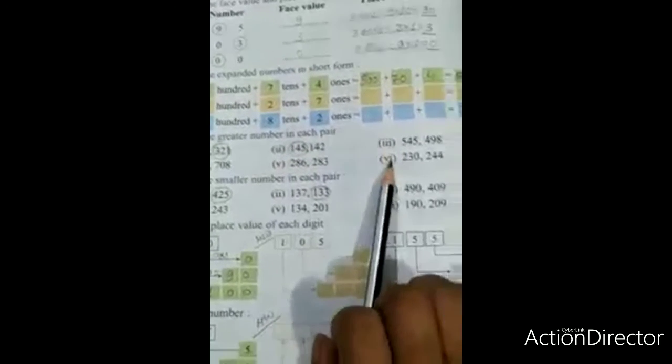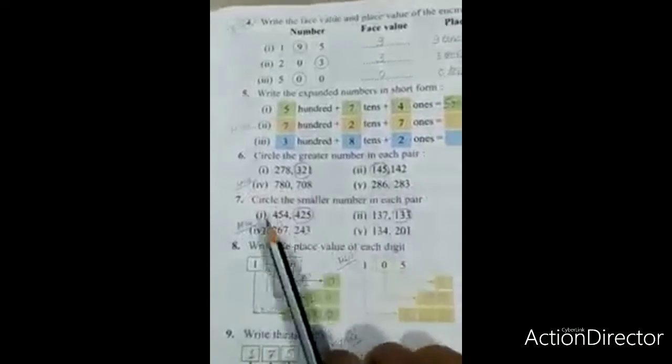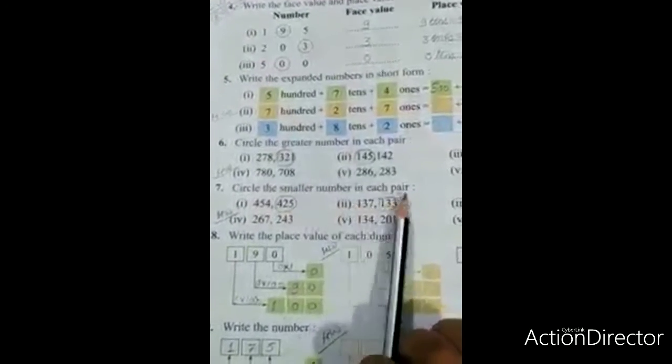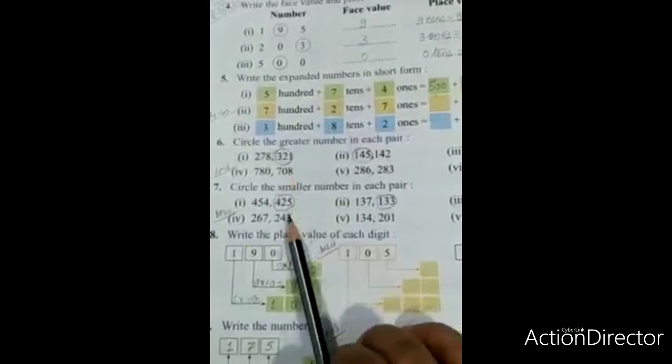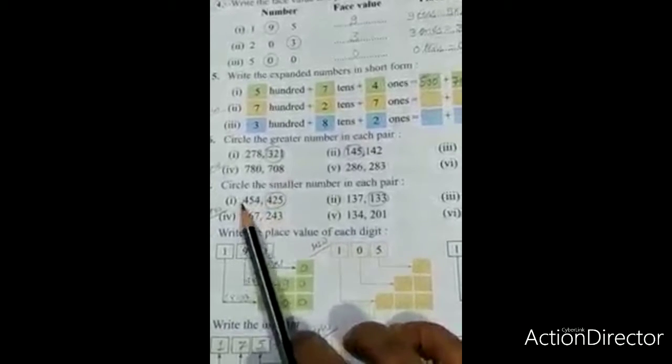Write here CW and today's date. Next: Circle the smaller number in each pair. Earlier we were circling the greater number, now we're circling the smaller number. Number one: 454 and 425.